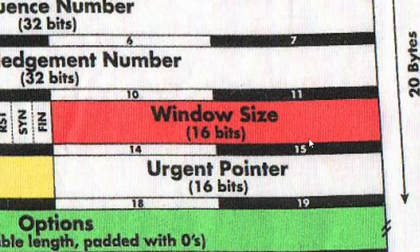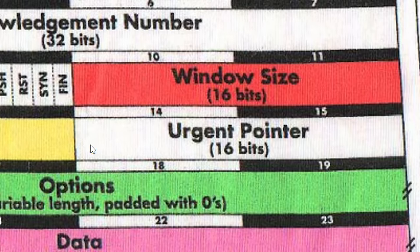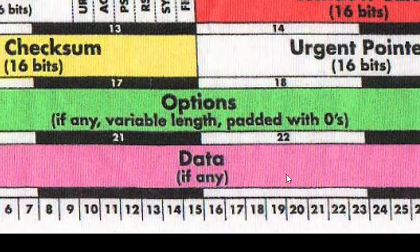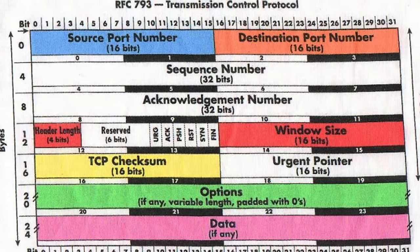In row 4, the Window Size field manages packet buffering, aiding in flow control. It's also useful for OS identification, as different operating systems have varying window sizes, allowing for OS prediction with about 80% accuracy. The checksum in row 5 ensures data integrity, while the URG pointer indicates urgent data if the URG flag is set. Row 6 contains options and padding, allowing for additional information and aligning the TCP header to a multiple of 32 bits. Understanding these TCP header fields is crucial for analyzing network traffic, identifying potential security threats, and gaining insights into the systems communicating over the network.